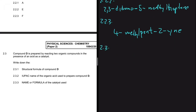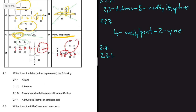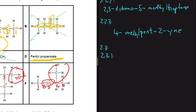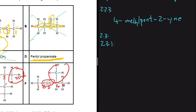Now for 2.3: compound D is prepared by reacting two organic compounds in the presence of an acid catalyst. For 2.3.1, let's write the structural formula of compound D. Compound D is pentyl propanoate. Since the name ends with 'anoate', it's an ester. In an ester name, the first part comes from the alcohol and the last part comes from the acid.